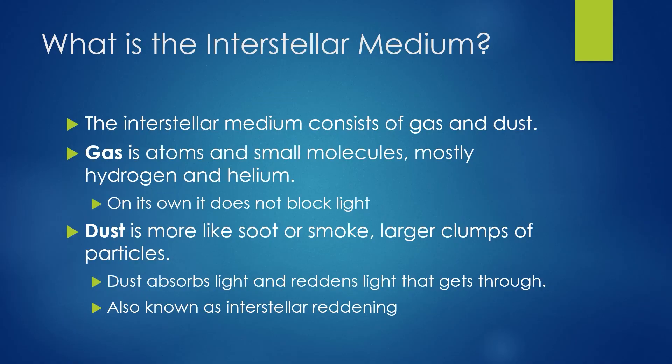What is the interstellar medium? The interstellar medium consists of gas and dust — basically it's the matter between the stars, collectively termed the interstellar medium. It is made up of two components: gas and dust. Gas is made up of atoms and small molecules. It does not block light — that's very important. It is mostly made up of hydrogen and helium, small molecules and atoms.